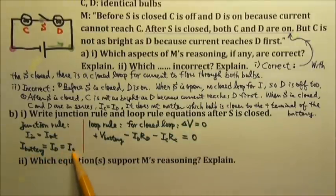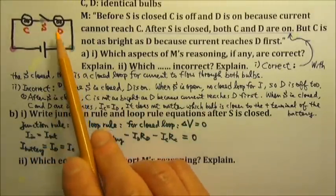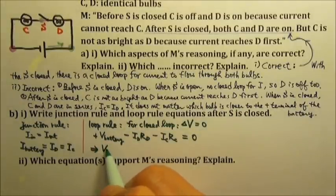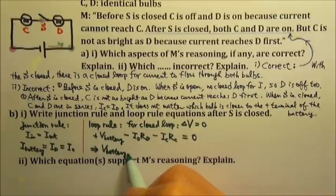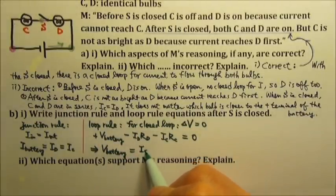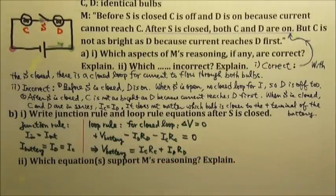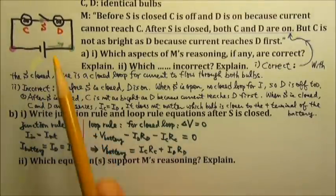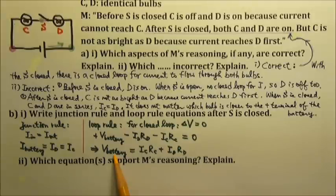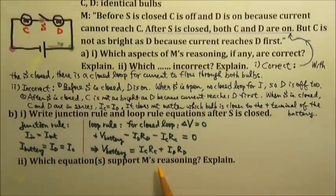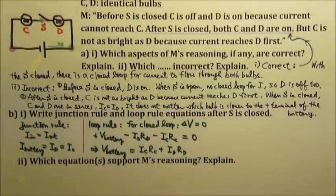The junction rule tells us that when these two resistors are in series, they get the same current. The loop rule gives us that the voltage provided by the battery equals the voltage across resistor C plus the voltage across resistor D. So when we say resistors in series share the total voltage, it is because of the loop rule.